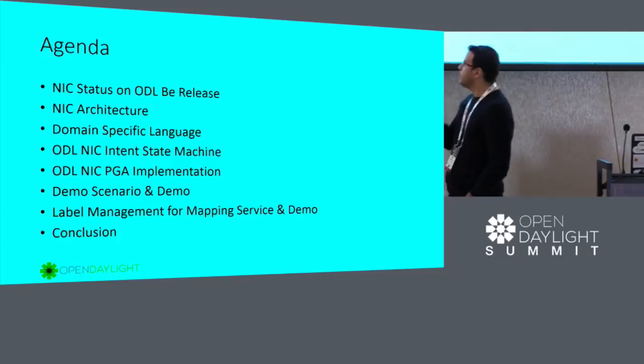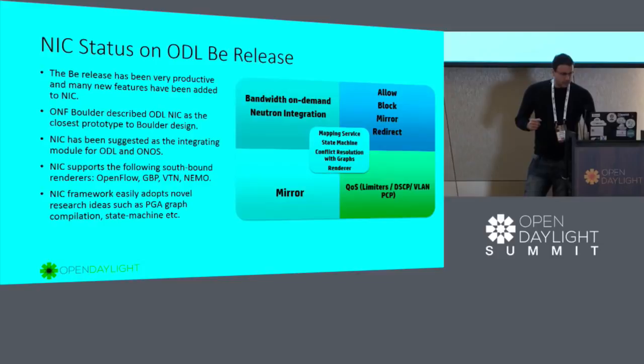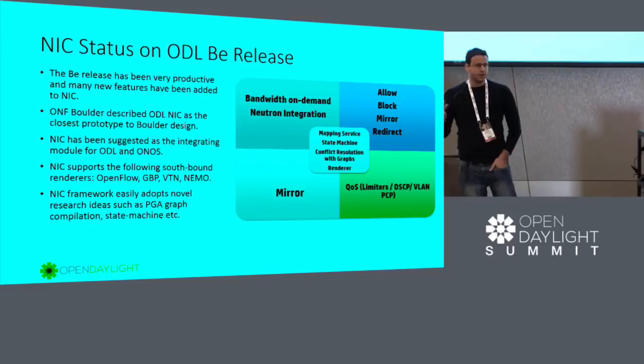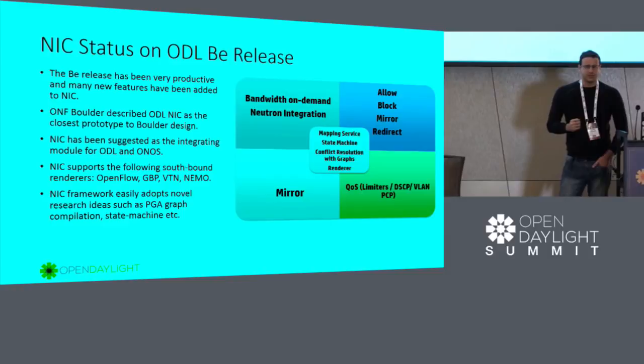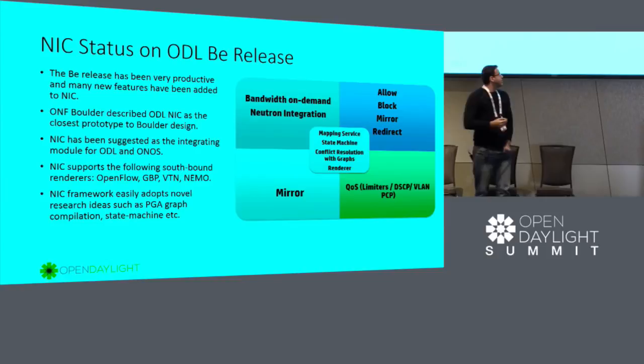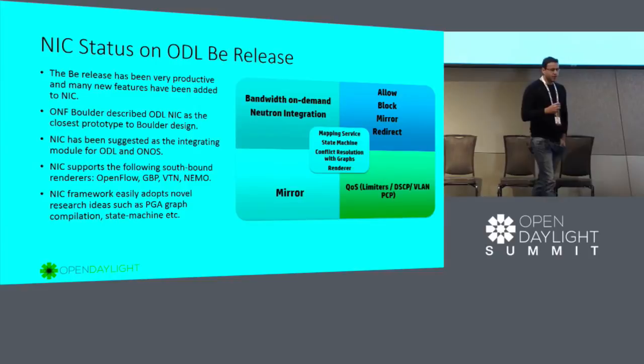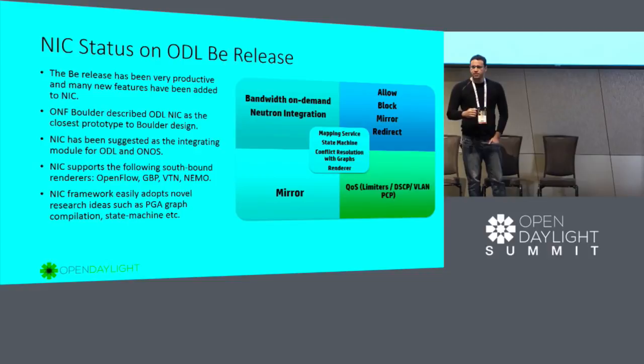I want to start talking about the current status of the NIC project on the Beryllium release. The Beryllium release has been very productive for the NIC project. On this release we had some new features for NIC. One of those features was bandwidth on demand, and another one was mapping sets that John will present today, and an intent state machine. This state machine will be responsible to keep track of all those intents. And we have conflict resolution using the graph on the NIC project.